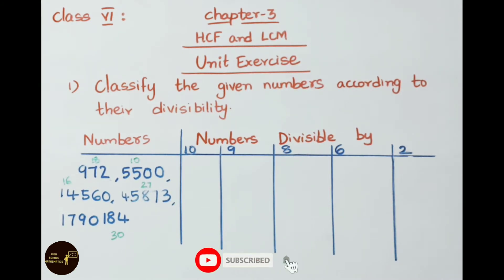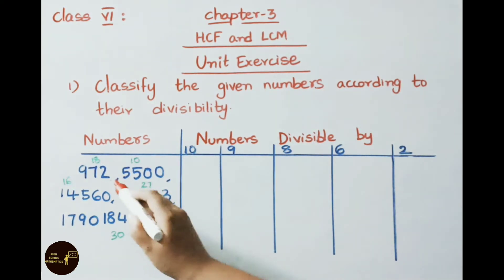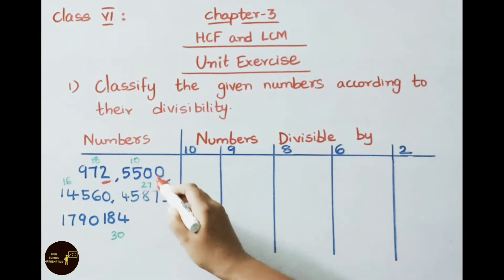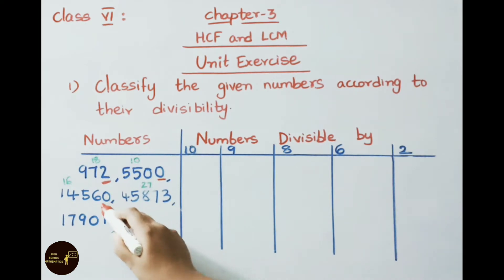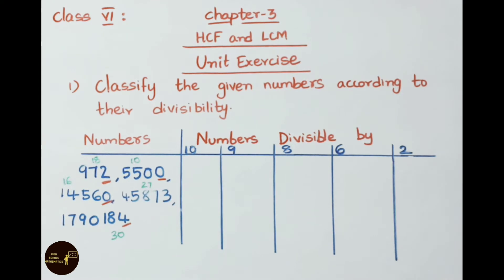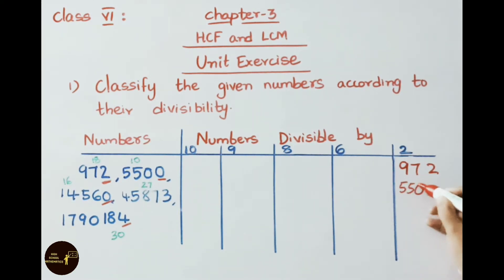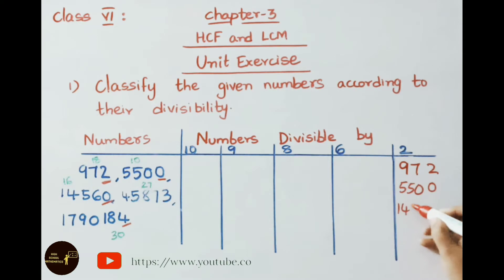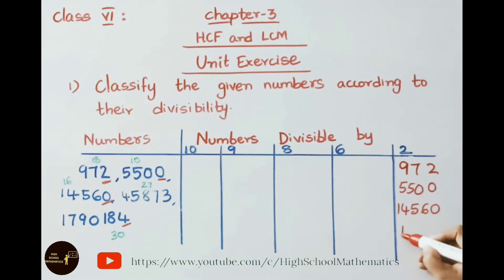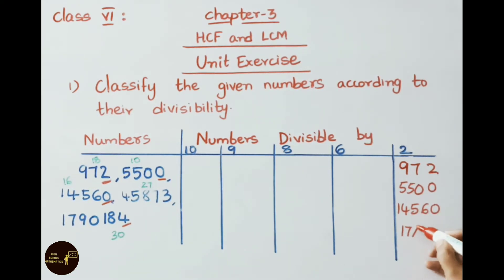We know the divisibility rule for 2: the unit's place must have either 0, 2, 4, 6, or 8. The first number ends in 2, the next ends in 0, the next in 0, and 1790184 ends in 4. So these four numbers — 972, 5500, 14560, and 1790184 — are divisible by 2.